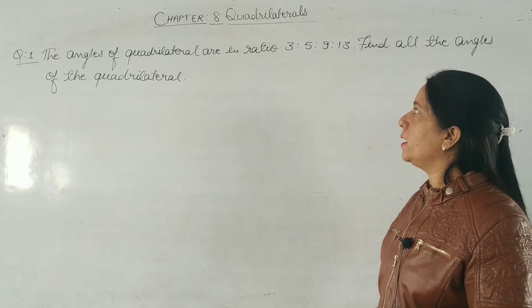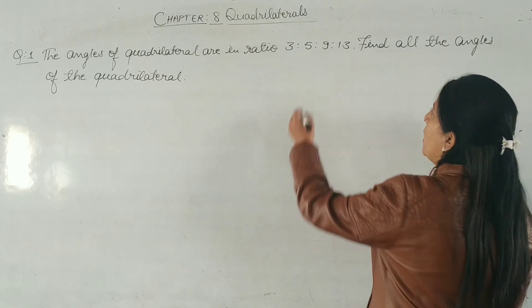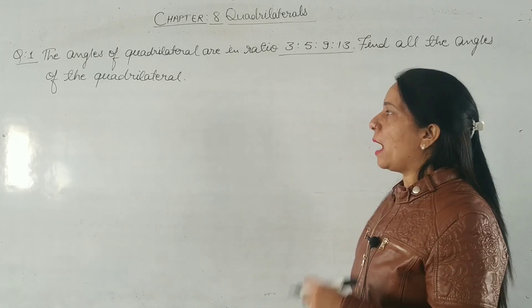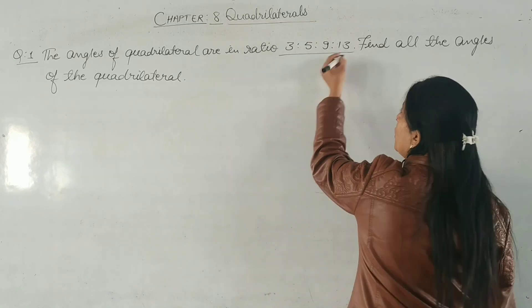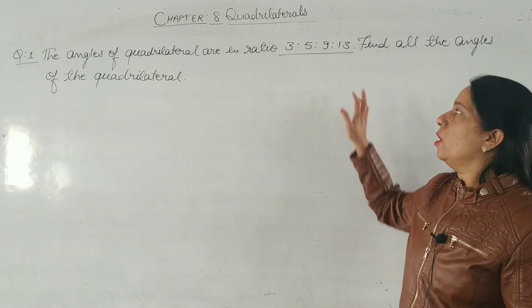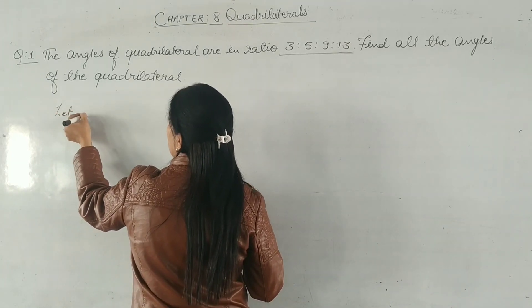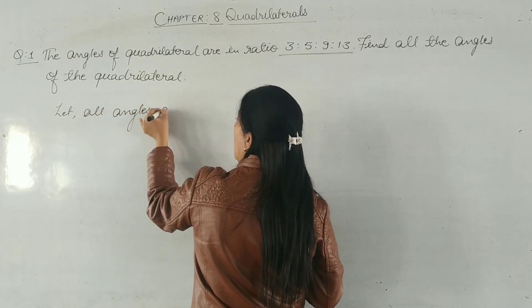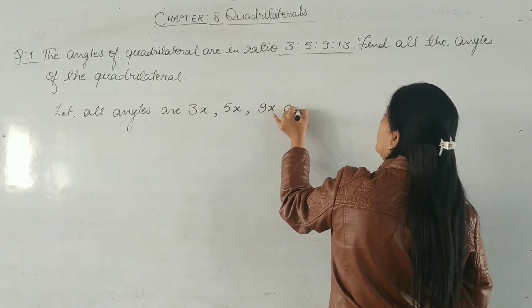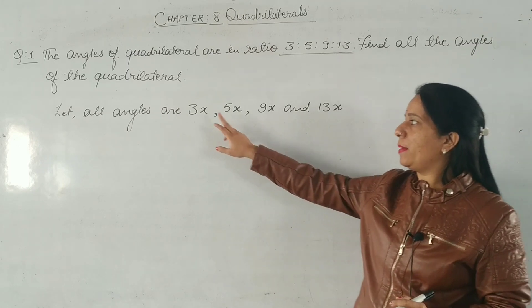The first question is: the angles of a quadrilateral are in the ratio 3:5:9:13, then find all the angles of the quadrilateral. The quadrilateral has 4 angles with a given ratio. We represent them as 3x, 5x, 9x, and 13x, which we have to find.